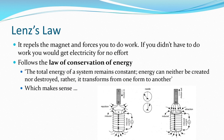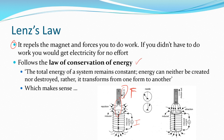From a conservation of energy point of view, Lenz's Law says it repels the magnet and forces you to do the work. As you push the magnet in, you have to put more force in to overcome the opposing polarity. If you didn't do that, you'd get current produced for no effort at all. Energy is not created or destroyed — it's transformed from one form to another. It is your force on the magnet that generates the current.